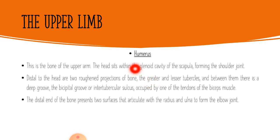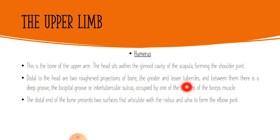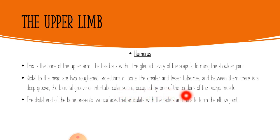Next is the upper limb, and the first bone is the humerus. The head of the humerus sits within the glenoid cavity of the scapula, forming the shoulder joint. Distal to the head are two bony projections: the greater and lesser tubercles. Between them is a deep groove — the bicipital groove or intertubercular sulcus — occupied by one of the tendons of the biceps muscle.